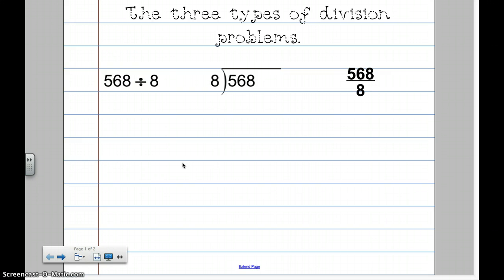First, let's talk about the three different ways that you could possibly see a division problem. So, 56 divided by 8. This is a way that you've seen before. You will never see a division problem like this,